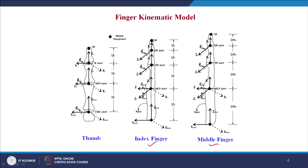Similarly, for the index and middle fingers we have considered 4 degrees of freedom: the MCP joint has 2 degrees of freedom — one is the abduction-adduction given by theta MCP and the other phi MCP — and phi PIP and phi DIP for the MCP, PIP and DIP joints. That gives 4 degrees of freedom considered for the middle finger as well.